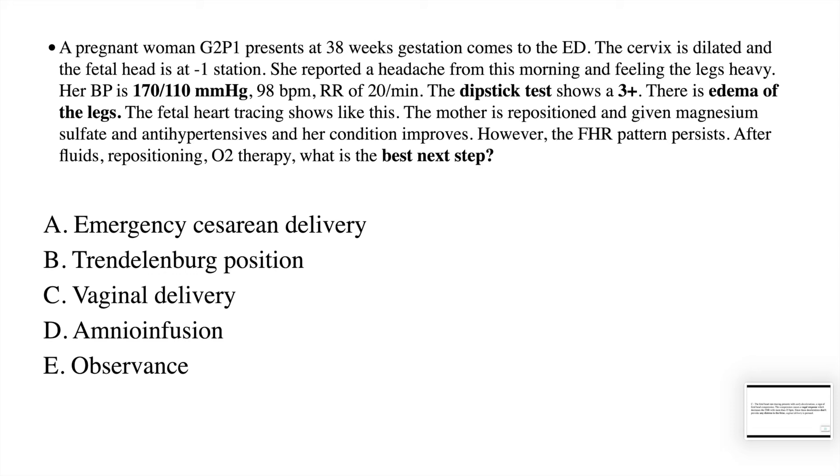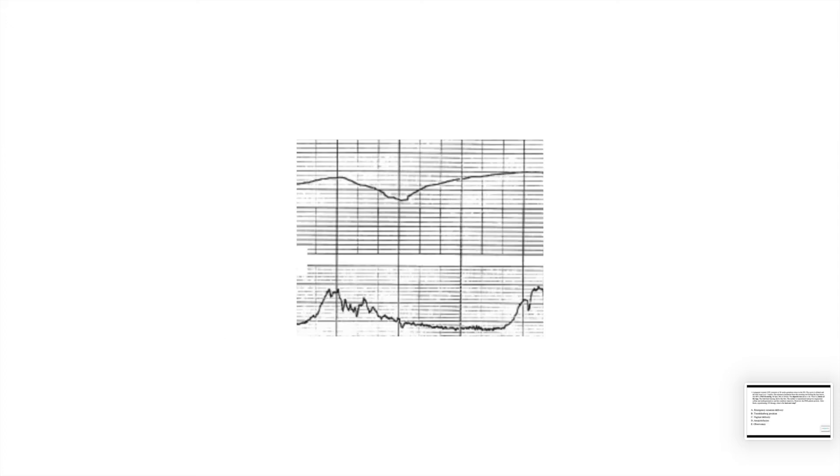Up until now, we can summarize all the information into the fact that she has preeclampsia. The heart tracing shows like this. As you can see, we have a deceleration that occurs after the uterine contraction. It lasts more than 30 seconds to attain its minimum.